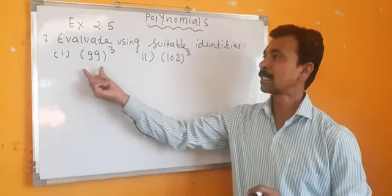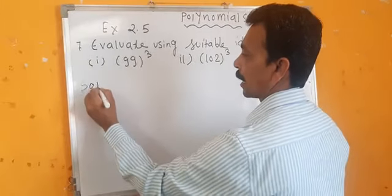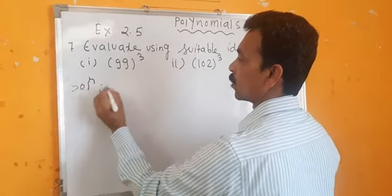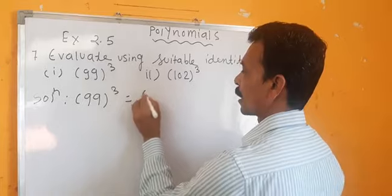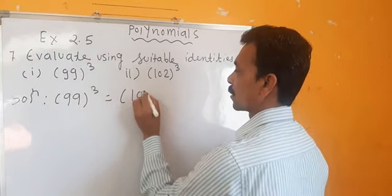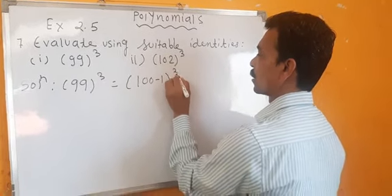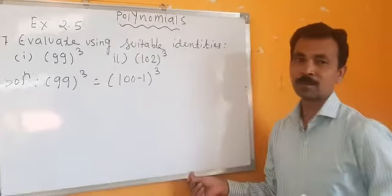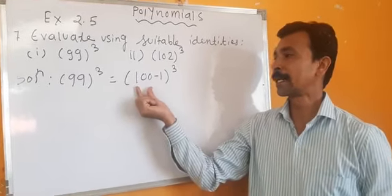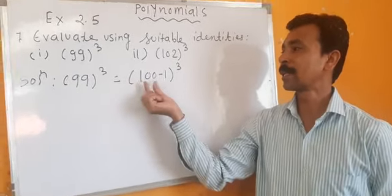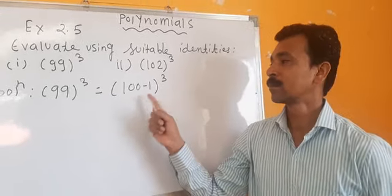The first term is 99 cube. 99 is very near to the number 100, so it will be written as 100 minus 1, whole cube. So 99 is written as (100 - 1) whole cube.